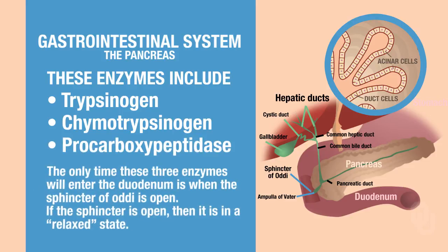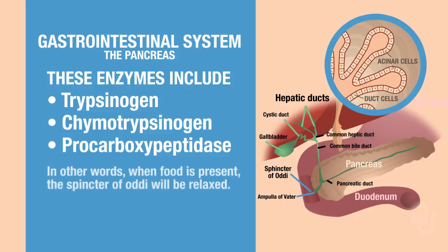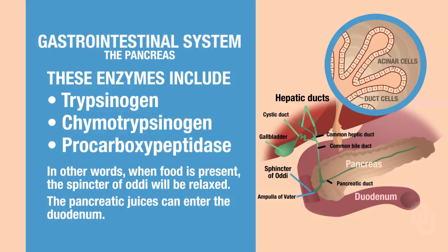The only time all of these juices can be dumped into the duodenum is if the sphincter of Oddi is open — in other words, when the sphincter is relaxed. This only happens when food is present. When food is present, the sphincter of Oddi will be relaxed, and the pancreatic juices can enter into the duodenum.